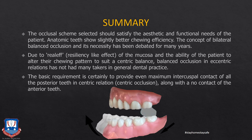In summary: the occlusal scheme selected should satisfy the aesthetic and functional needs of the patient. Anatomic teeth show slightly better chewing efficiency than non-anatomic teeth because of their cuspal inclines and sharp cusps. The concept of bilateral balanced occlusion and its necessity has been debated for many years due to the resilience of the mucosa — first described by Hanau, who noted that the mucosa overlying the residual ridges is mainly 80% water, so occlusal forces during mastication cause compression and settling of the denture. This resilience effect led to questioning the actual necessity of balanced occlusion in eccentric as well as centric movements, which is one reason balanced occlusion has yet to be fully accepted by general dental practitioners.